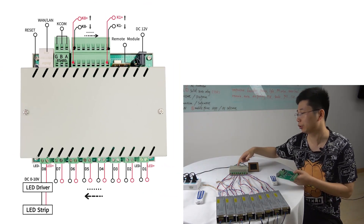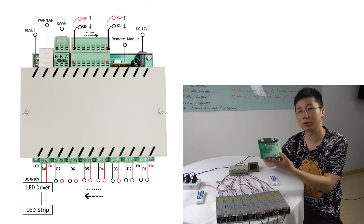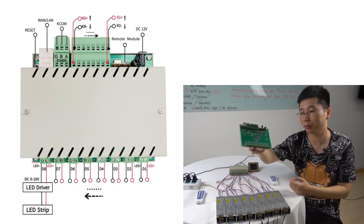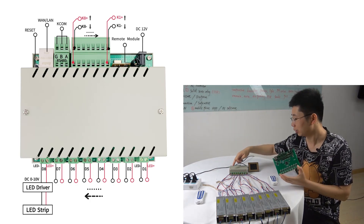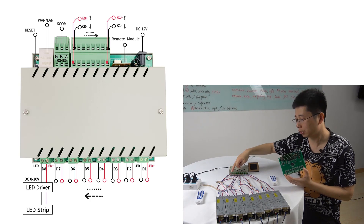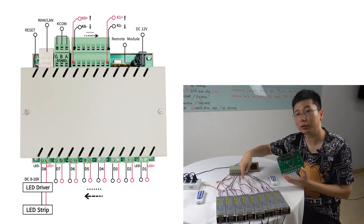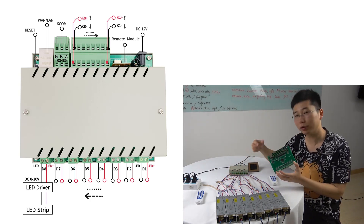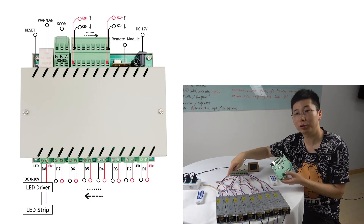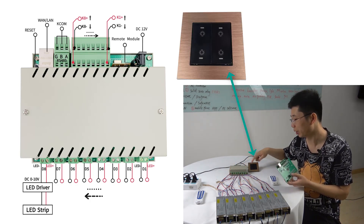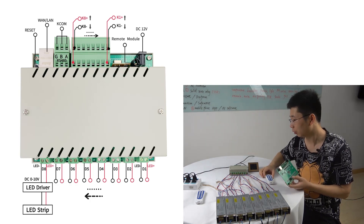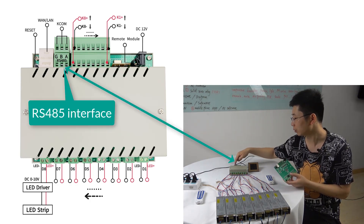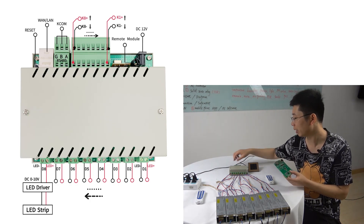This is the 8-channel dimmer and this is the board of the 8-channel dimmer. This can connect with the 8-channel LED strip. You can control the LED strip by the light switch panel, or the wireless remote, or by the RS485 interface and by the Ethernet.